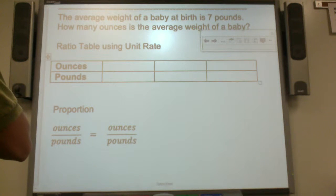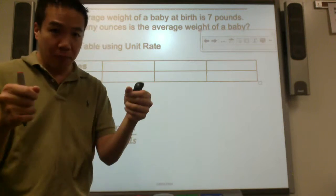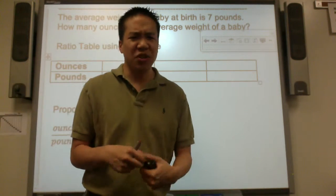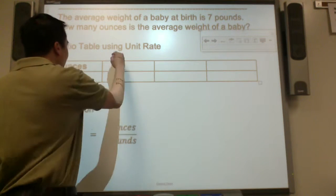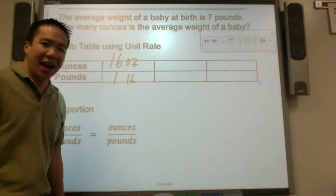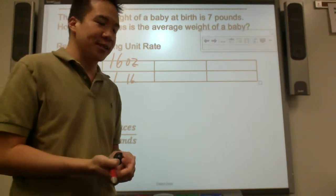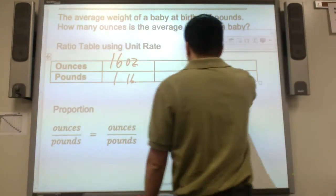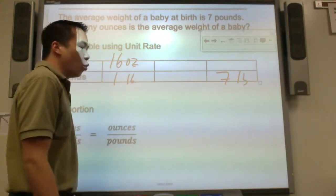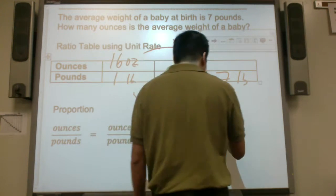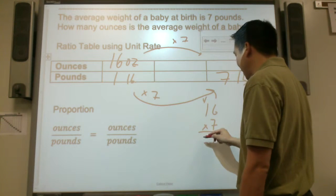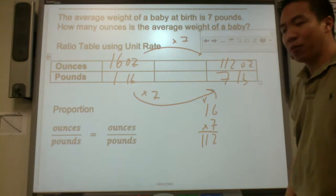The average weight of a baby at birth is 7 pounds. How many ounces is the average weight of a baby? I'm going to use unit rate. Looking at your 6th grade mathematics chart, which you will be able to use on the STAAR test, there are 16 ounces for every 1 pound. If you have a 1 pound bag of flour, it weighs 16 ounces. Where would you label 7 pounds? I'm going to put it right here. How do I scale forward from 1 pound to 7 pounds? I multiply by 7. So 16 ounces times 7: 42, carry the 4, 112 ounces is the same or equivalent as 7 pounds.